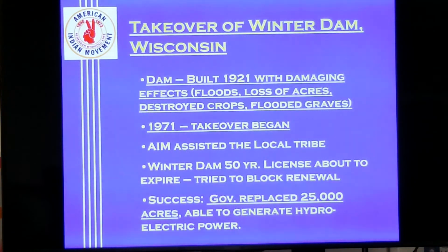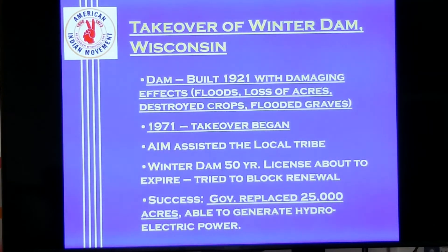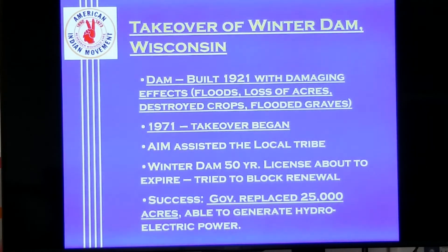Another takeover was the takeover of Winter Dam in Wisconsin, built in 1921. When you build a dam, it floods all the area behind it — and that area was owned by the local tribes. The government said they needed the hydroelectric power and reservoir, so they flooded thousands of acres of tribal land, destroying their crops and flooding their graveyards. Fifty years later, AIM helped organize a takeover of the dam, assisting the local tribe. Winter Dam had a 50-year license renewal about to expire, and by occupying it they forced the governor to negotiate. The governor eventually gave them 25,000 acres of land to repay what was flooded, plus rights to the hydroelectric power generated at the dam.